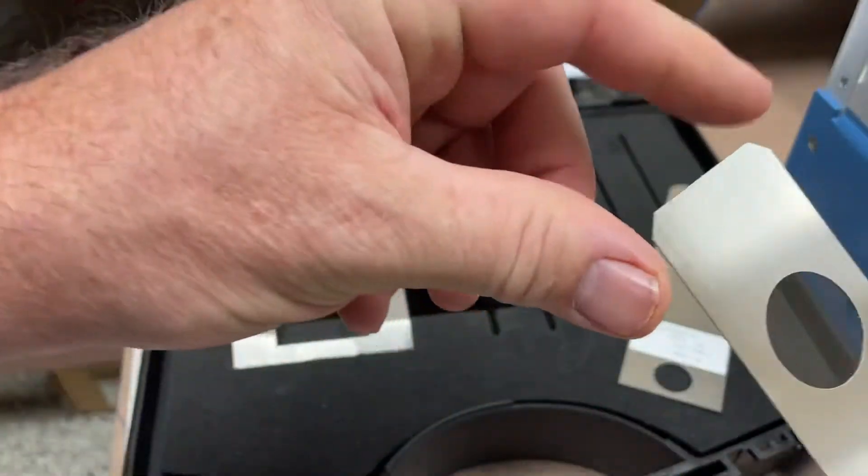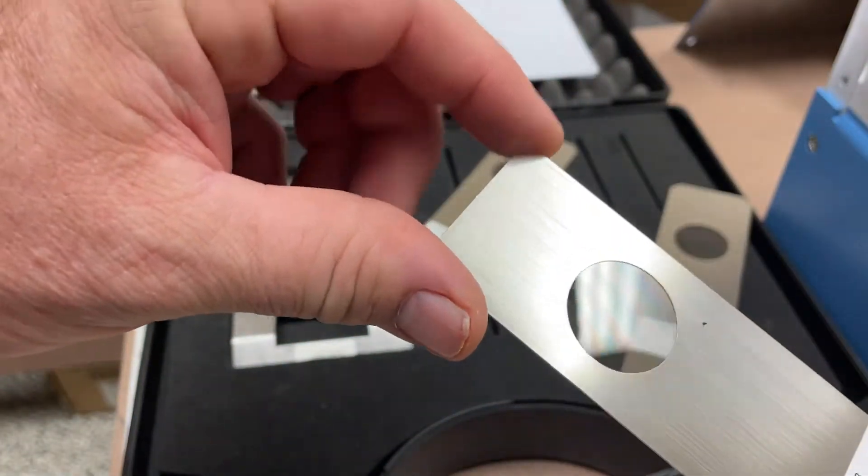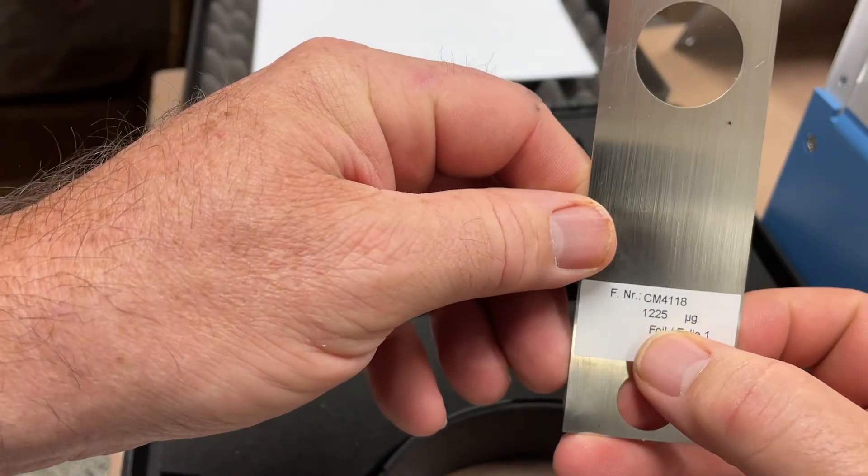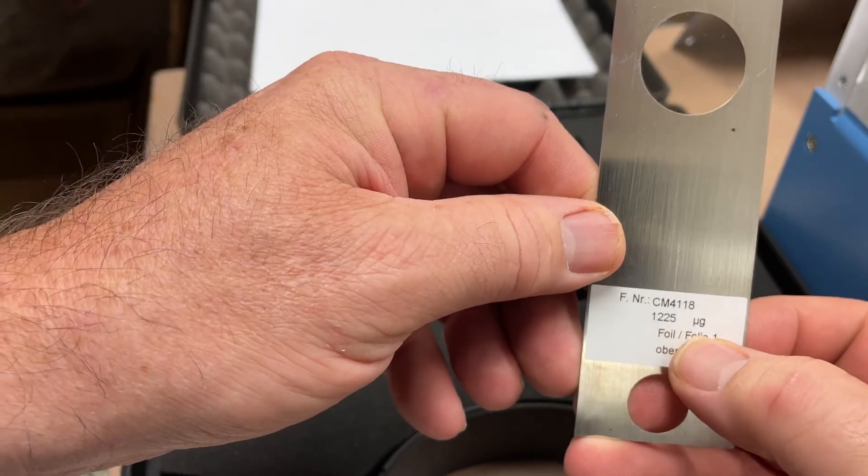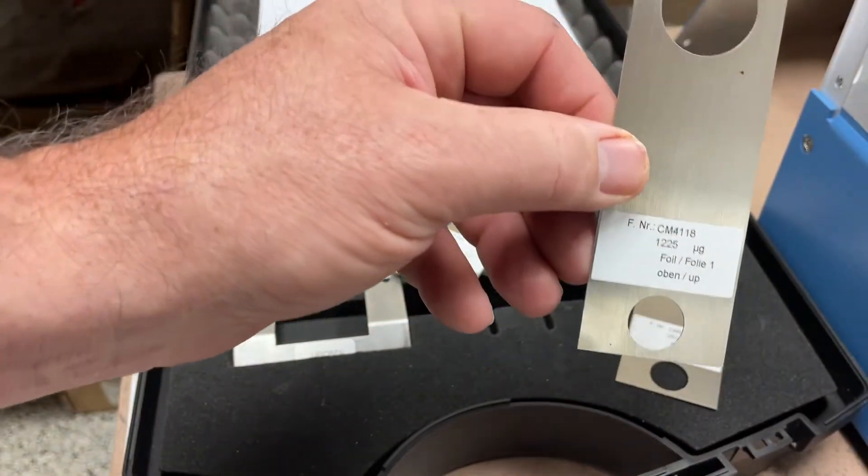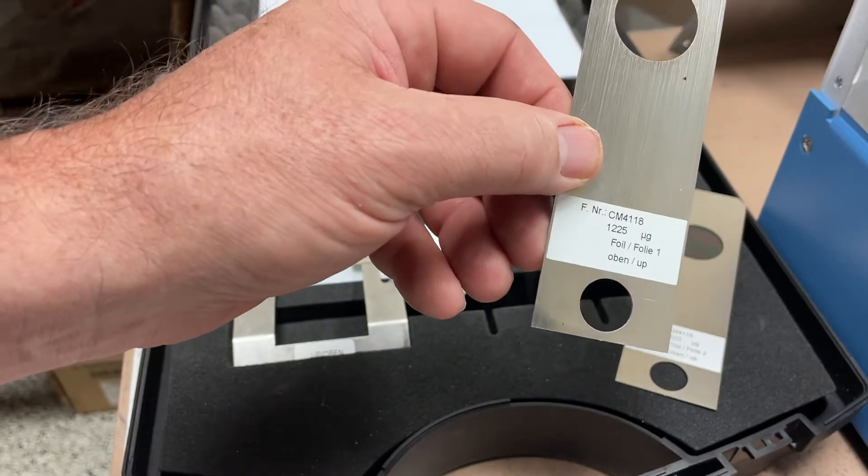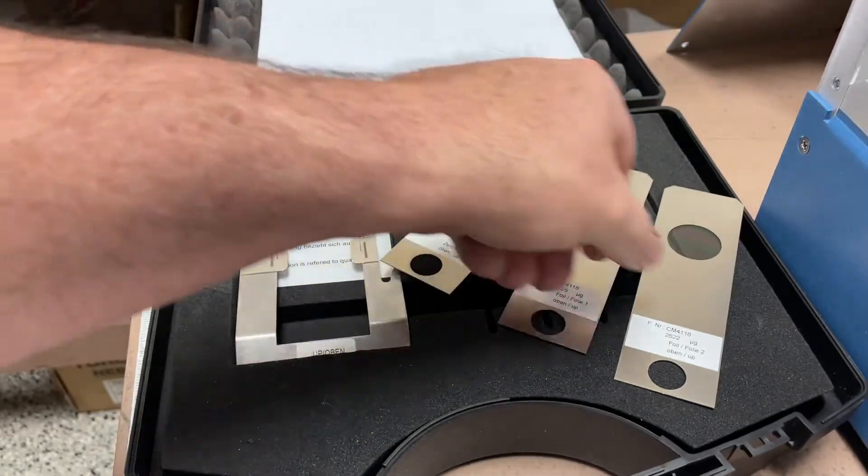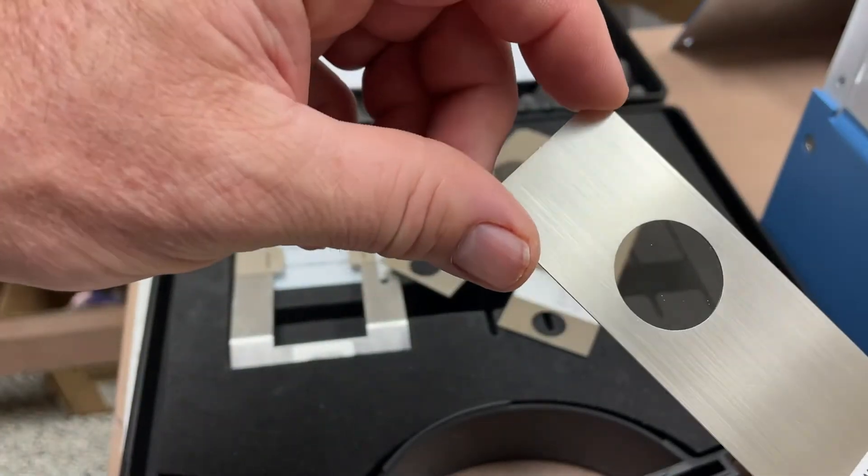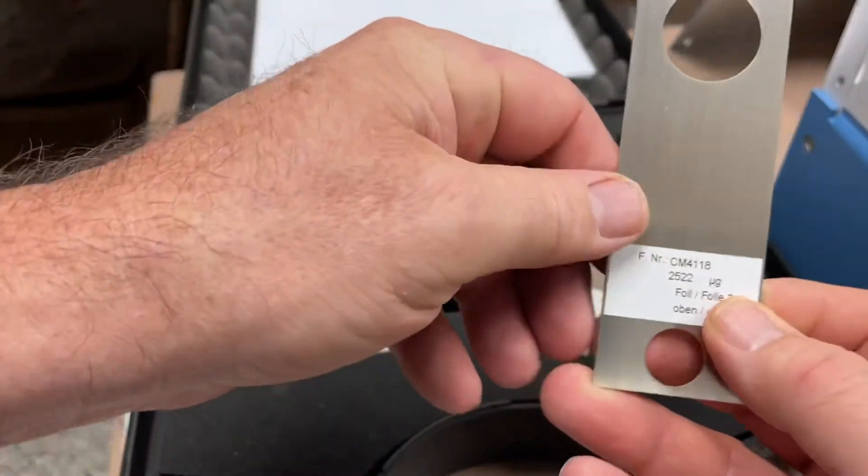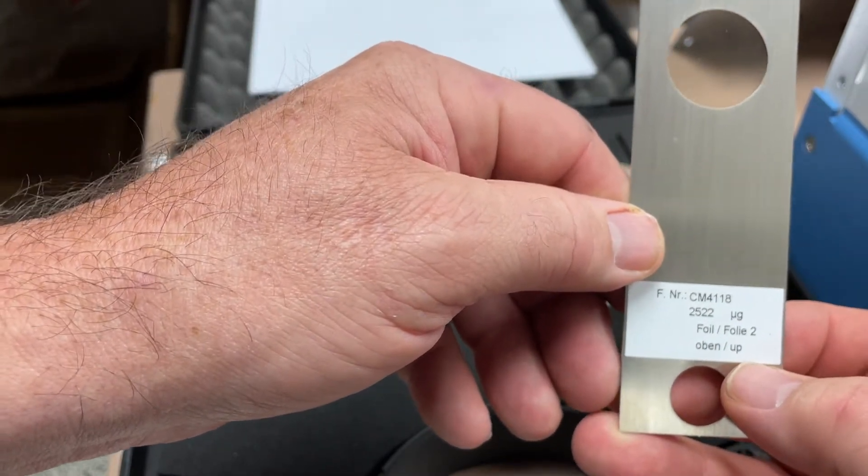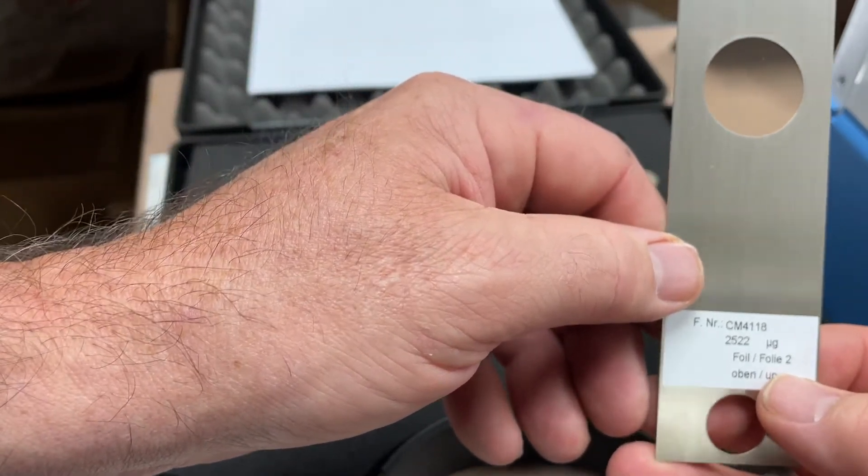The next one has a foil in this little circle and is labeled 1225 micrograms, so that's the number that should come up if the instrument is calibrated properly. The third one has 2522 micrograms labeled on it, so that's the number you would calibrate this foil to.